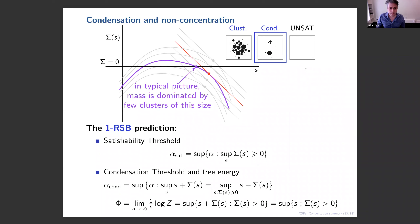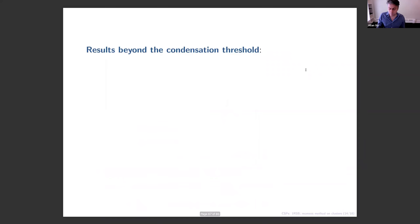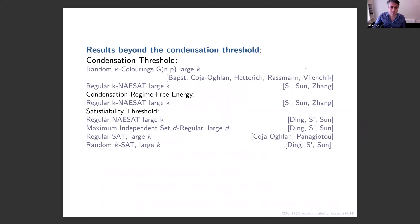From this heuristic calculation we can read off the satisfiability threshold, the condensation threshold, and the free energy in the condensation regime. But this presupposes that sigma exists and that we know its value. These predictions have been verified in a number of different models. The satisfiability threshold has been established across a whole range of models. The condensation threshold has been established by Coja-Oghlan's group for random colorings, and also for the regular NAE-SAT model. The free energy inside the condensation regime has been worked out for the regular NAE-SAT model.